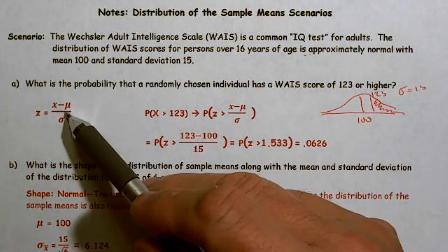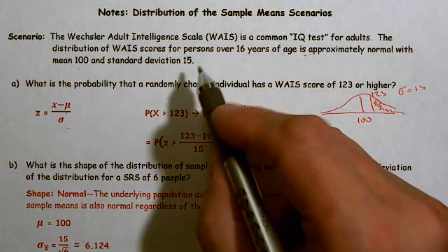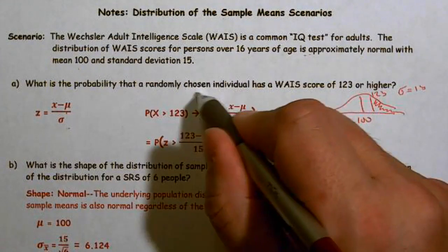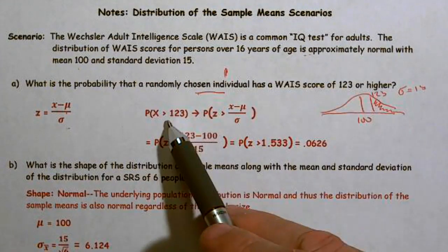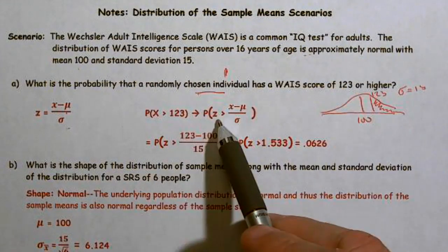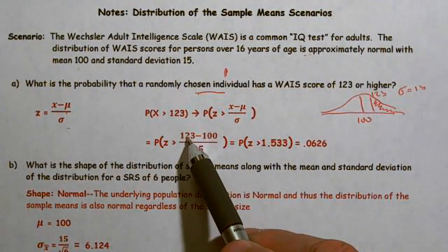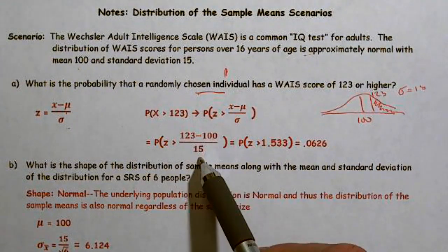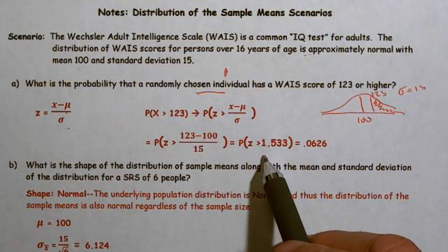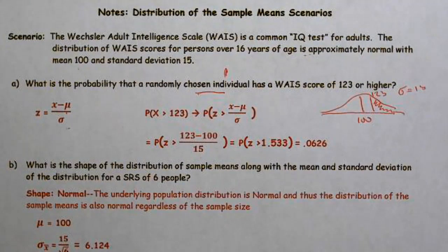So z = (x − μ) / σ, because they asked about the probability of a randomly chosen individual — in other words, a sample size of 1. We want P(X ≥ 123), so z = (123 − 100) / 15. Always write the z-score; we get a z of approximately 1.53.